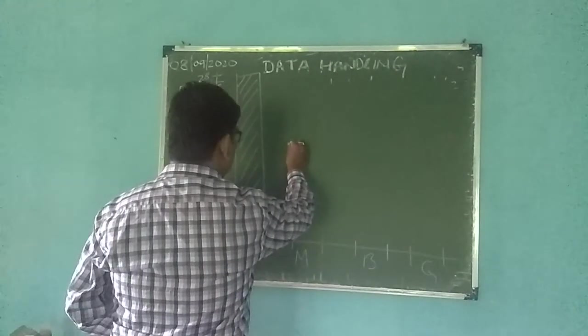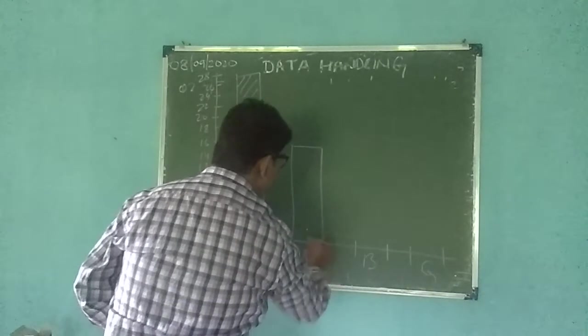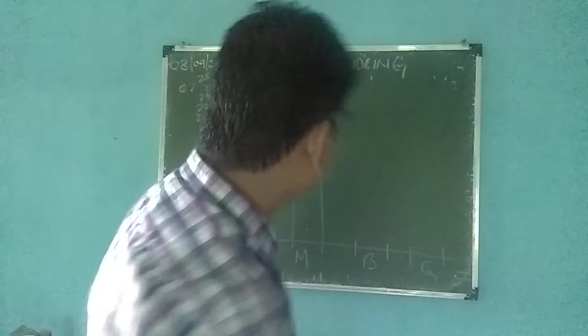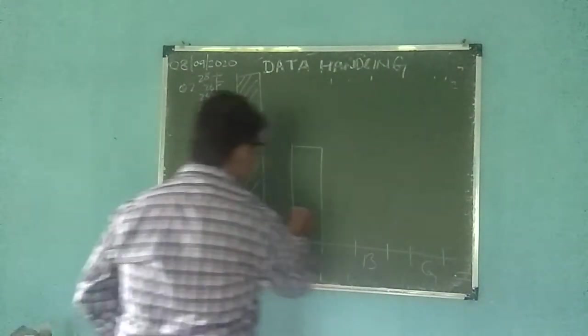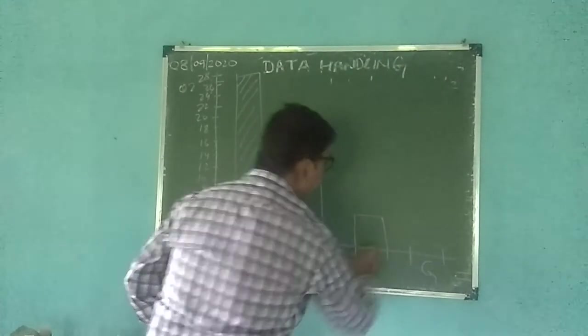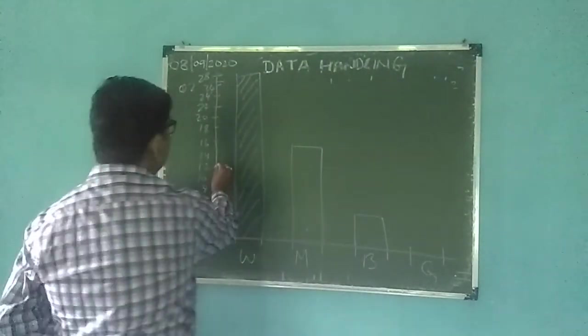And after that you have B. B is 5. So 5 again will lie between 6 and 4, so here it is. Then you have G. G is 12, so 12 is here. With the only we have the number here.